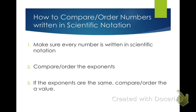Step two: compare and order the exponents. Whichever exponent is bigger — if we're going in the positive — that's the one that's going to be larger. Or whichever exponent is bigger if we're looking at the negatives, that's the one that's going to be smaller. And if the exponents are exactly the same, then you compare and order the value — the number in front of them.